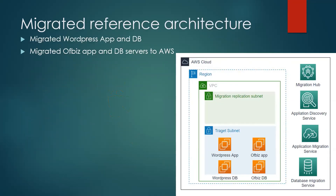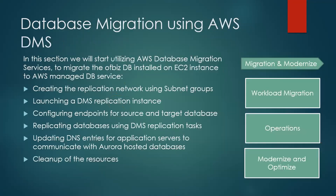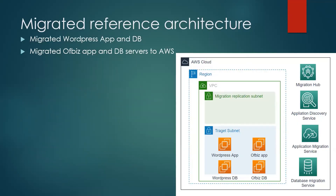That was it for this video. In the next video I'll cover database migration — everything has been moved to AWS, but now we need to modernize the infrastructure. Using DMS (Database Migration Service), we will migrate the database from EC2 instances to AWS managed database services. I hope I have clarified your concepts on the migration architecture using AWS Application Migration Service. If you like this video, please subscribe to the channel and like it. See you in the next video for database migration services.